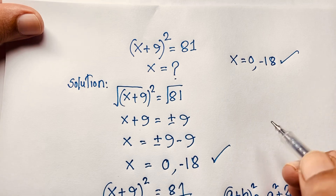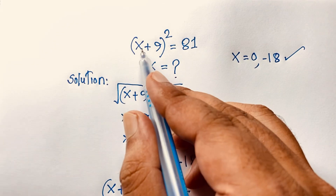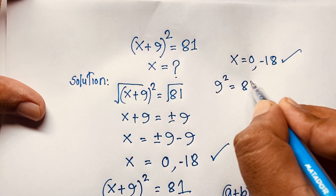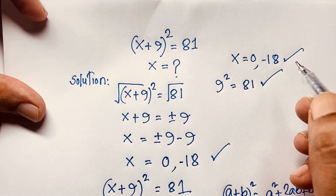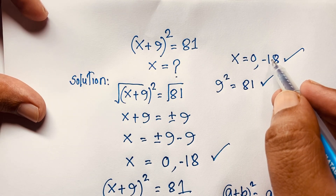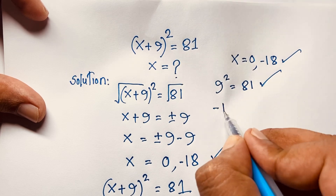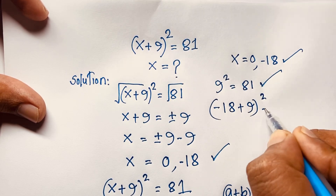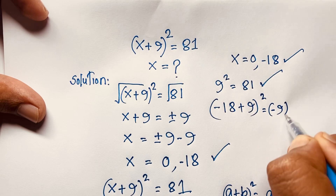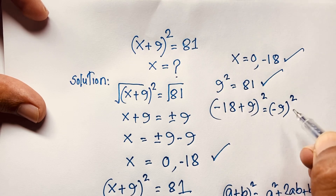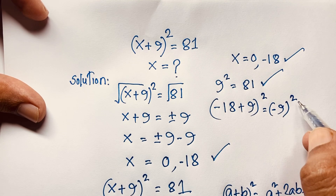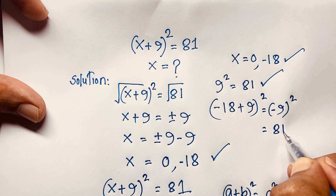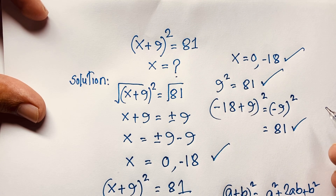Let's verify: if you put x = 0, it will be 9² = 81, so left hand side and right hand side are both equal. Now if you take x = −18: (−18 + 9)² = (−9)² = 81, and since a negative number raised to an even power is always positive, it is 81. So left hand side and right hand side are both equal.